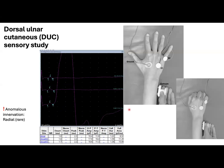Here we have an antidromic dorsal ulnar cutaneous sensory study with the recording electrode placed over the web space between the little and the ring fingers, and the reference placed over the metacarpophalangeal joint. Others may prefer to place both electrodes more distally, but the potentials are very similar with either recording technique. Also, I wanted to show you an alternative hand position that I think can improve stillness while avoiding displacement of the electrodes.